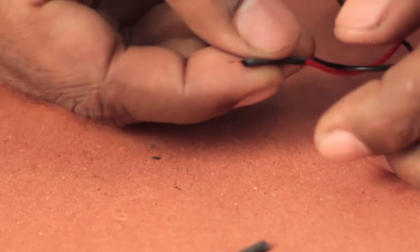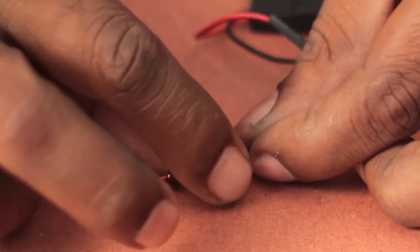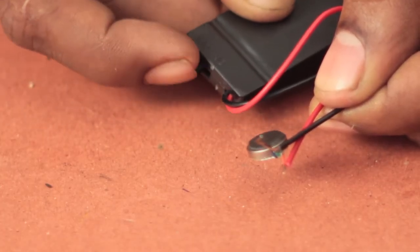A small piece of heat shrink tubing is inserted. If you don't have it, use some insulation tape once the connection is made. Then we go for a quick check and it works good.